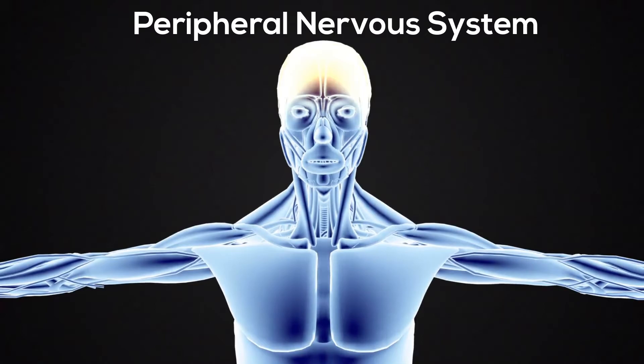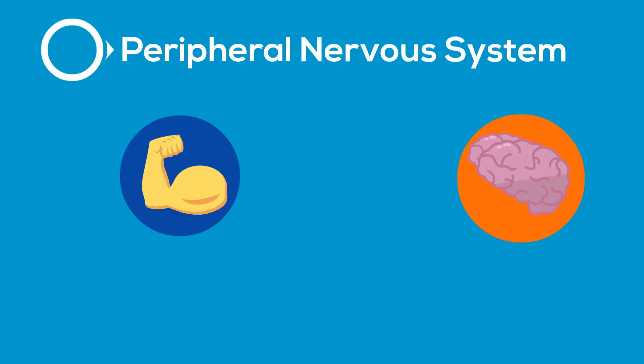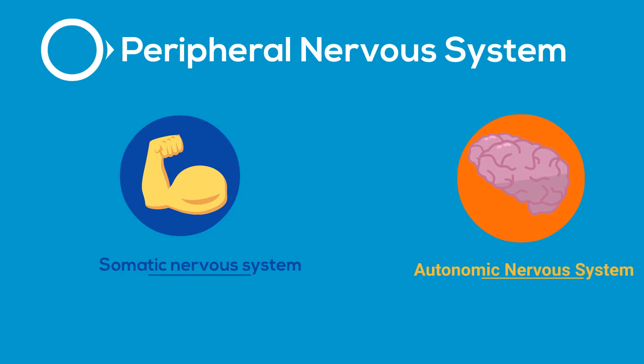The peripheral nervous system can be divided into two minor systems: the somatic nervous system and the autonomic system.